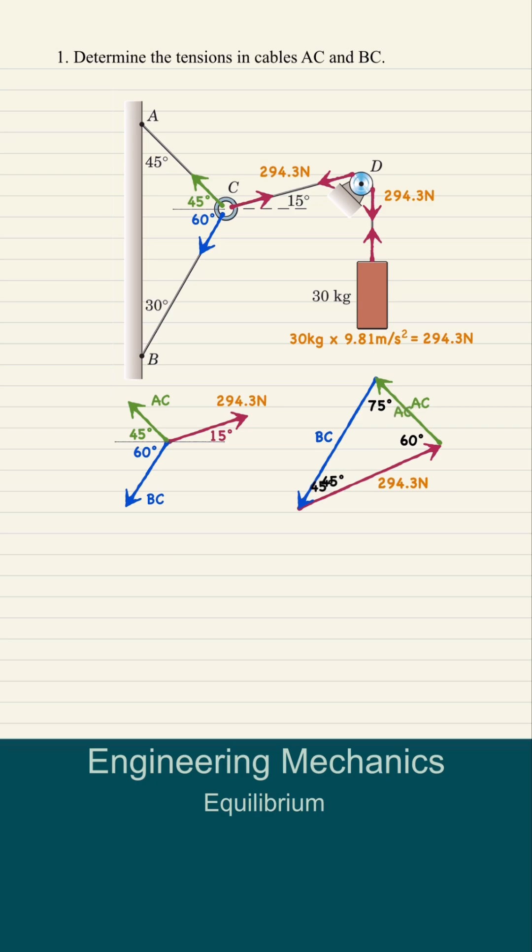Using the law of sines, AC over sine 45 is equal to 294.3 over sine 75. And solving for AC, we get 215.44N.